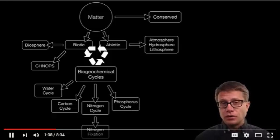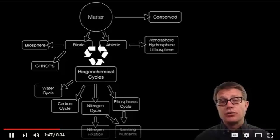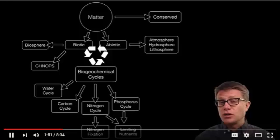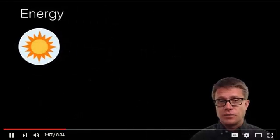We will then move to the phosphorus, one of the slowest turning cycles. It involves rock but no atmosphere. Now both nitrogen and phosphorus are what are called limiting nutrients. That means life really needs them and it is waiting for them. And once it gets those nutrients then it grows really quickly. That is a good thing but sometimes can lead to eutrophication. And then finally we will finish with the sulfur cycle.